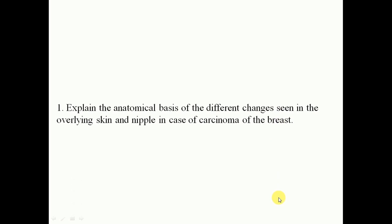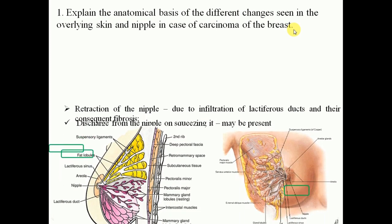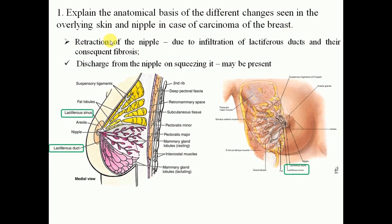For the first question — explain the anatomical basis of the different changes seen in the overlying skin and nipple in case of carcinoma of the breast — if there is a cancerous lump in the breast, on examination there might be retraction of the nipple. Retraction of the nipple is due to infiltration of the lactiferous ducts and their consequent fibrosis.